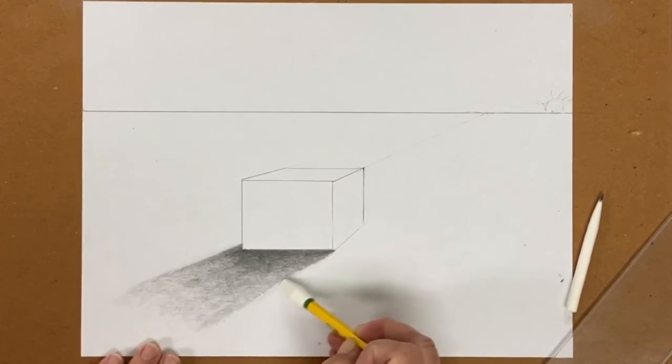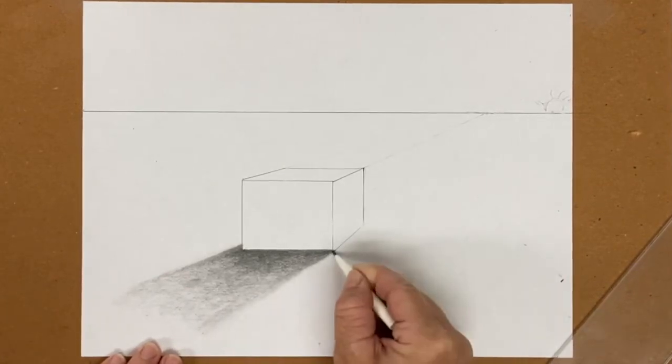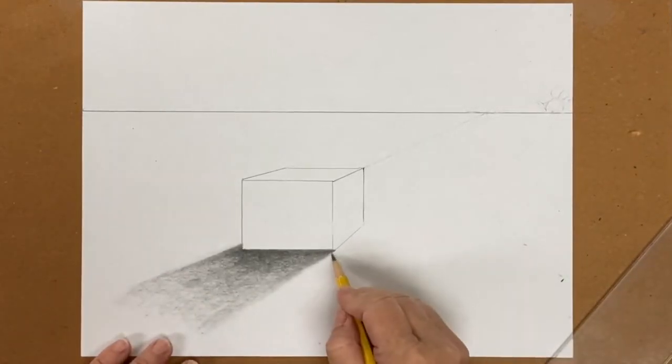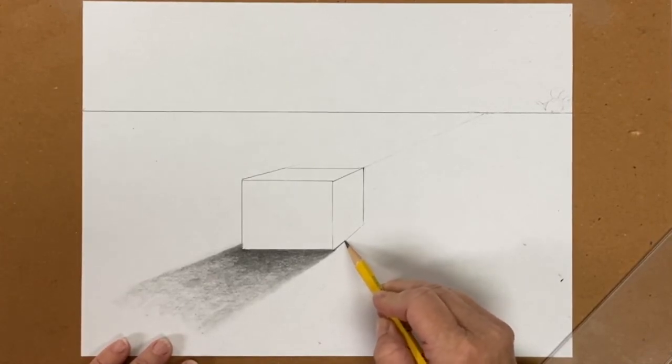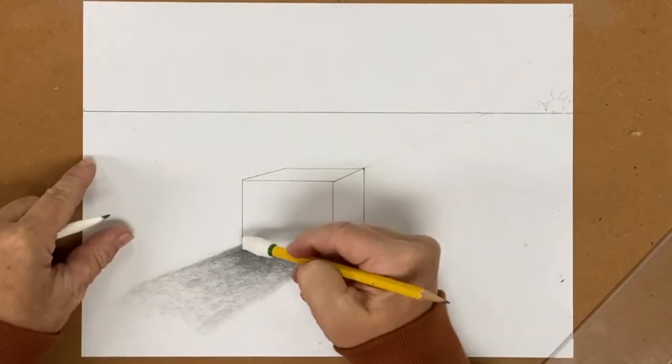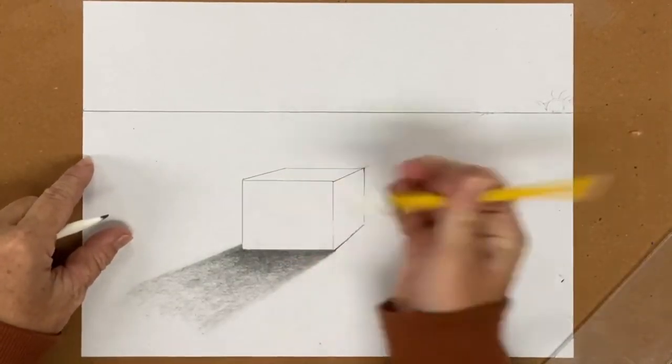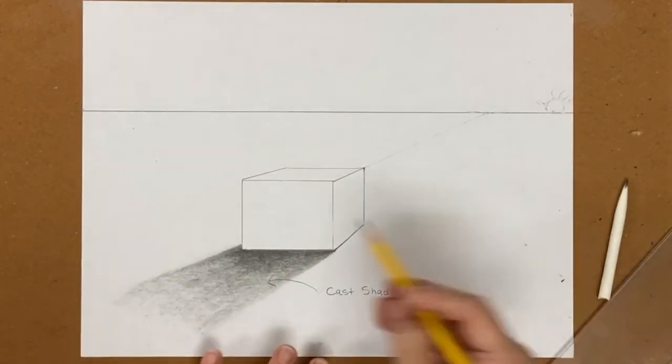You always want to keep your shadows soft on the edges, so I want to get rid of this little pencil line. I'm gonna go back and soften the edge here. I can stay a little bit sharper closer to the object. I can even put a slight cast shadow, barely, right underneath the edge of the object on the right side. All right, so this is our cast shadow.